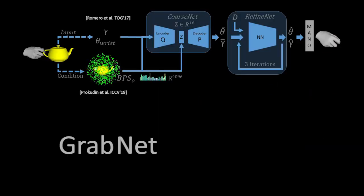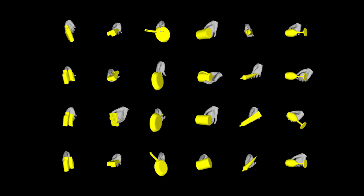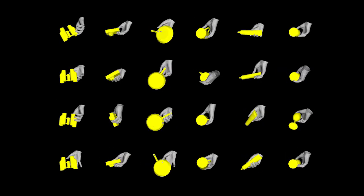We train a network called GRABnet that generates 3D hand grasps for unseen objects. A perceptual study shows that the generated grasps look realistic.